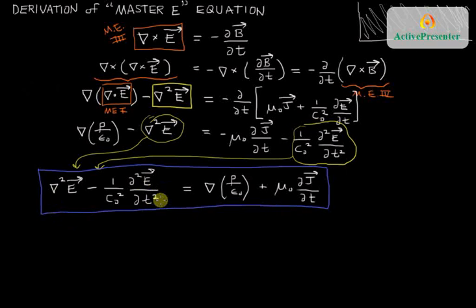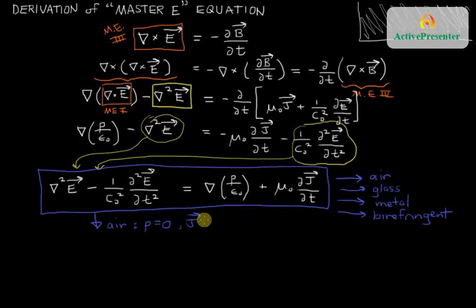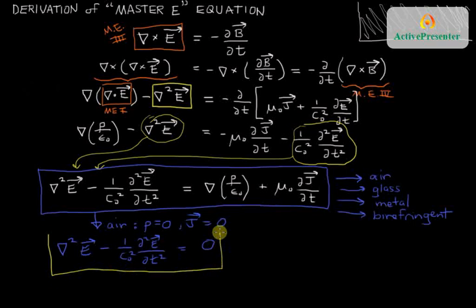The reason I call this the master E equation is because it applies in all situations, not just in vacuum, but inside of a glass, inside of a metal, inside of a birefringent material. And we will be simplifying this equation all throughout the semester. But for right now, we want to consider the specific case of air or vacuum, where ρ equals zero, there's no charge, and there's no current density or charge density. Well, in that particular case, then we would get this simplification. And this equation, the left-hand side stays the same, the right-hand side becomes zero. And this equation here, this is called the 3D wave equation.